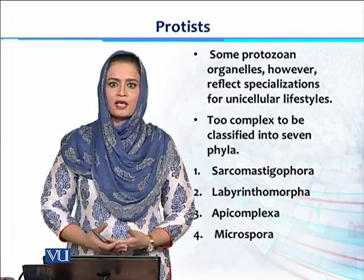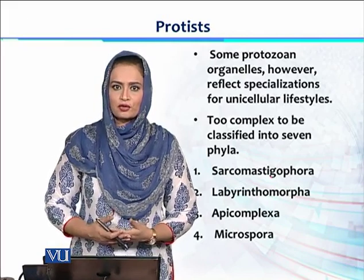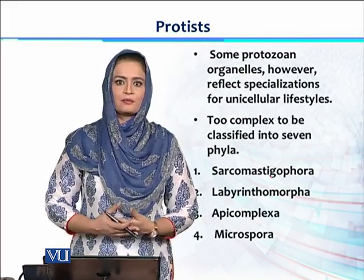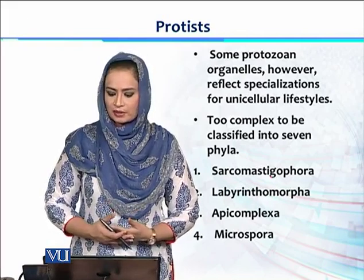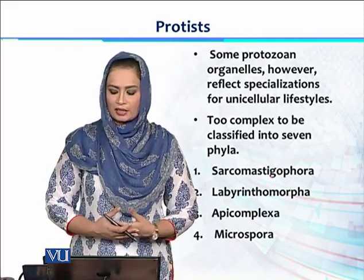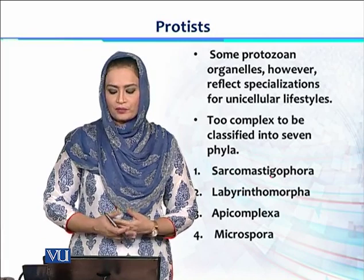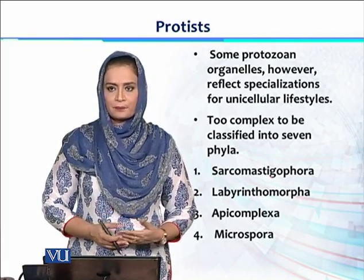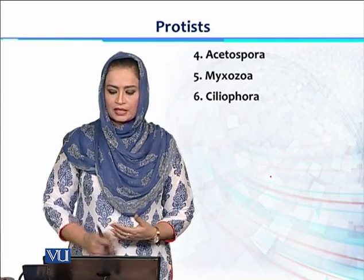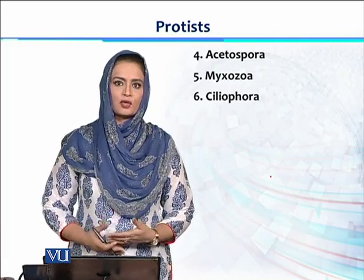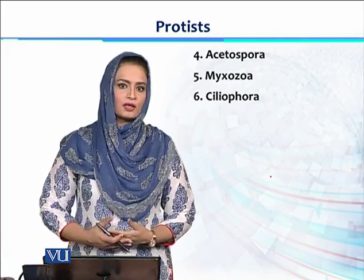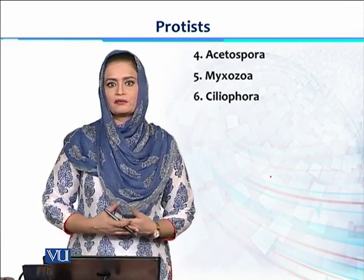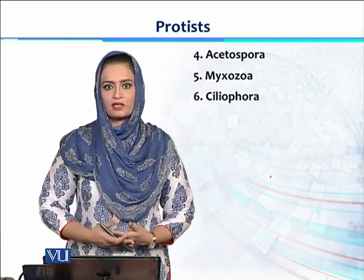Because protists are so complex, we can further classify domain Protista into seven phyla. These seven phyla are: Sarcomastigophora, Labyrinthomorpha, Apicomplexa, Microspora, Acetospora, Myxazoa, and Ciliophora. All these seven phyla will be discussed one by one.